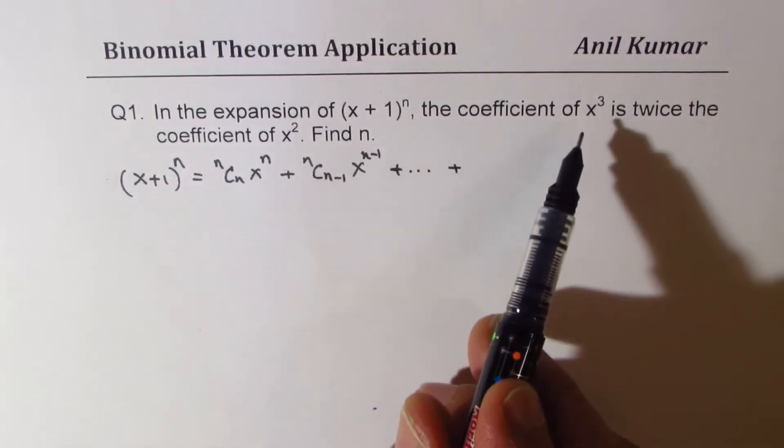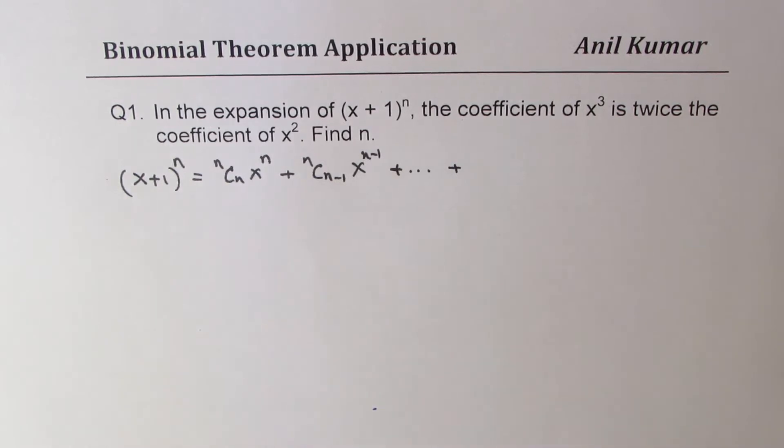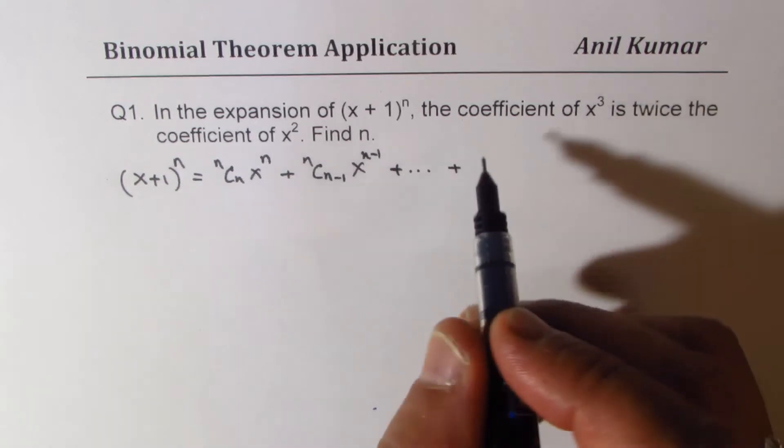Now, since we are interested in x³, we can look into the terms with nCr where r is 3, right? So that will give us x³.